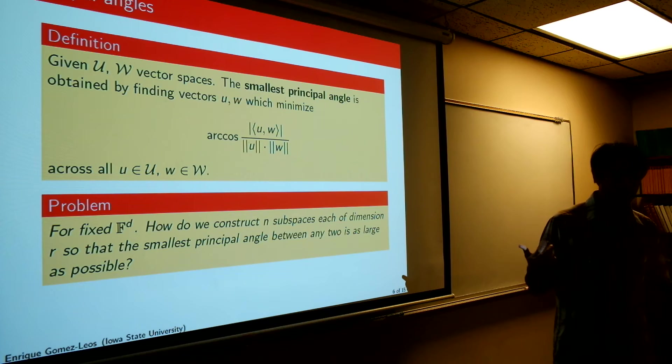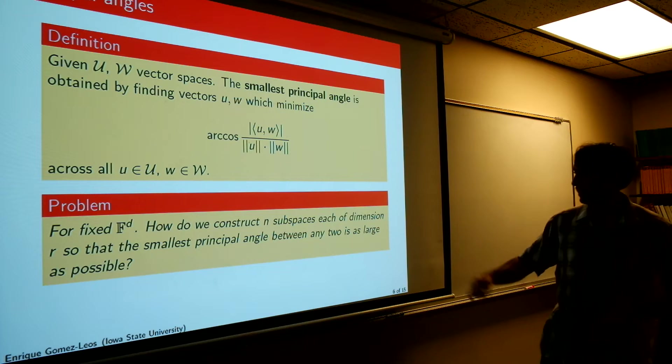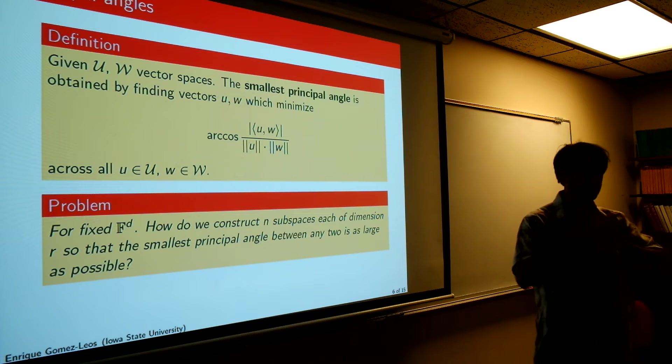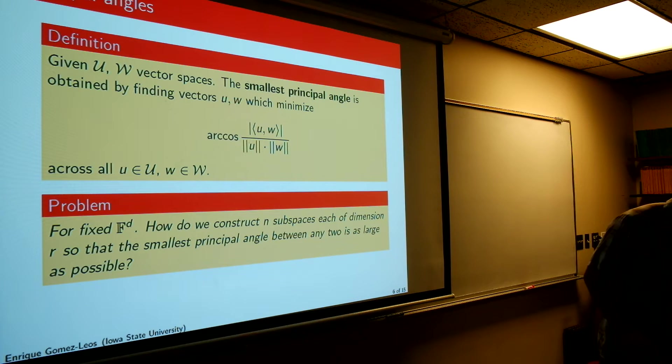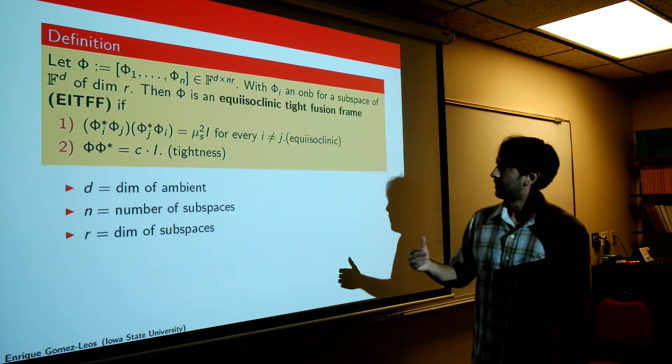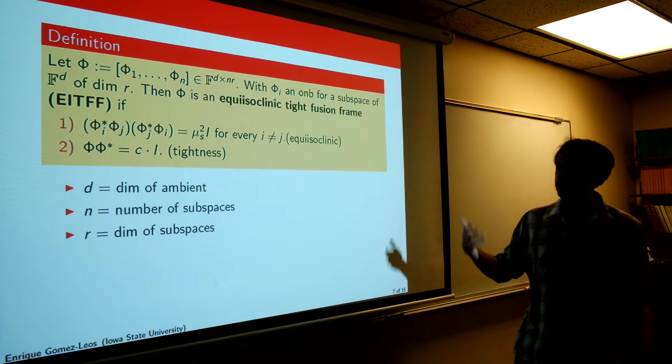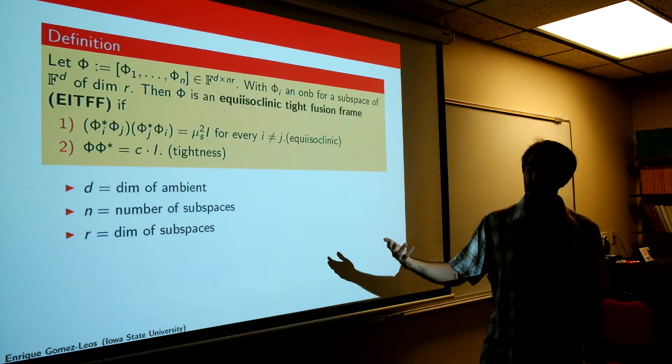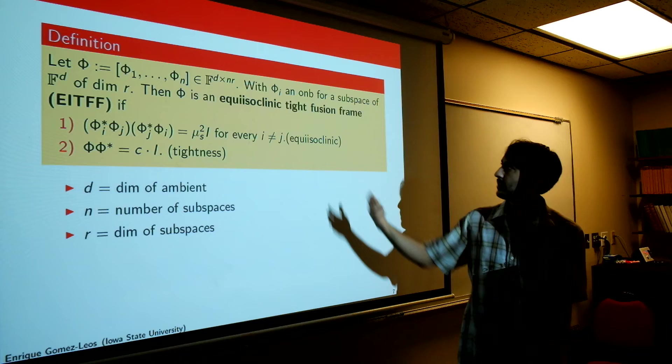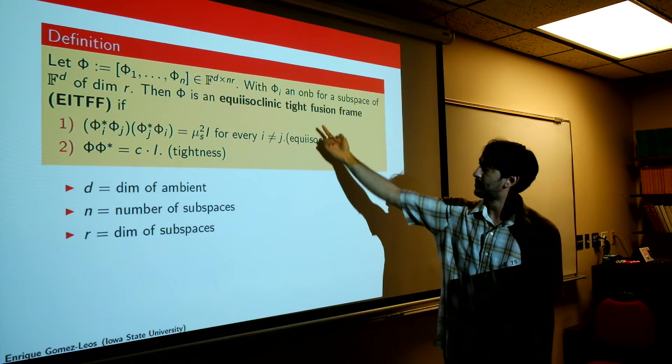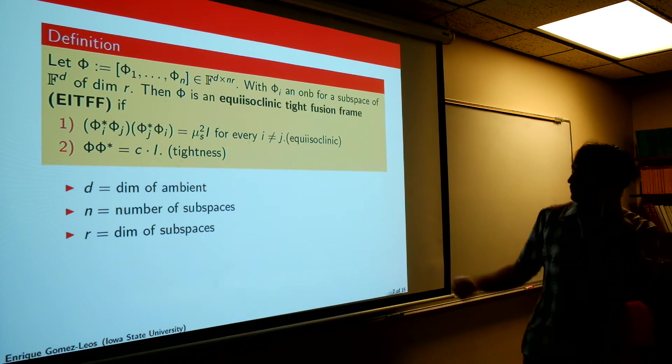So we're looking at the smallest principal angle, and so this is the parameter we want to optimize. So we want to have it so that all our subspaces have the largest, the smallest principal angle is as large as possible. The smallest principal angle is as large as possible between any two. And so we have a definition that motivates us. In the same regime, we have a similar Welch type bound, and we're concerned with when we actually achieve this bound. And achieving this bound happens whenever we have an equi-isoclinic tight fusion frame. So this is an EITFF for short.